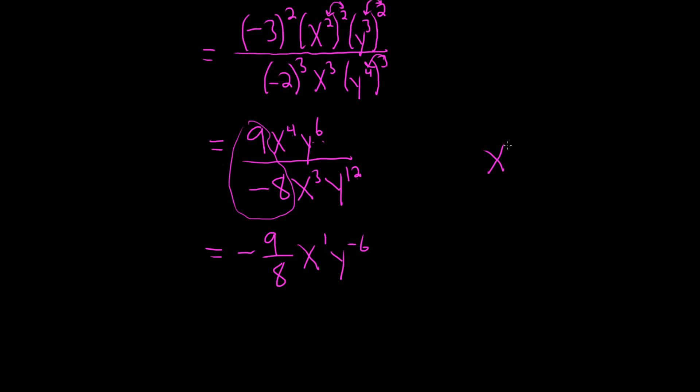Again, I'll show this step over here. So x to the 4 over x to the 3, that becomes x to the 4 minus 3, that's the rule. The rule says that when you divide, you're supposed to subtract. Same thing here, y to the 6 over y to the 12th, that's the same thing as y to the 6 minus 12, which is y to the negative 6.